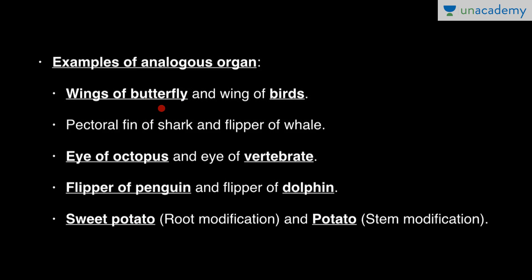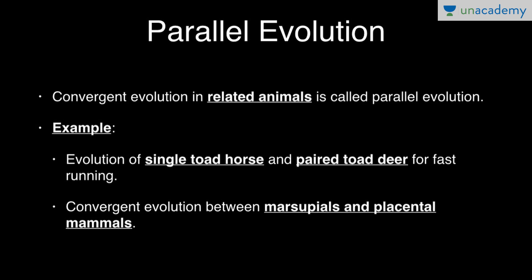Similar habitats lead to the same adaptive features, and those same adaptive features produce analogous organs. Convergent evolution in closely related animals is called parallel evolution.